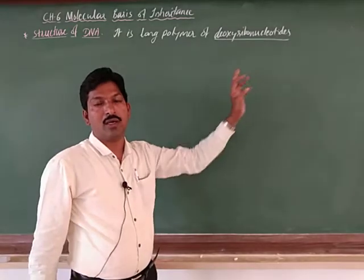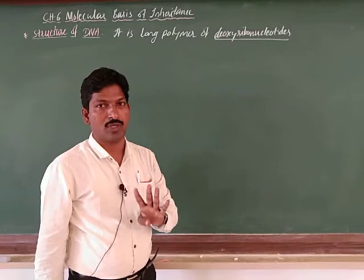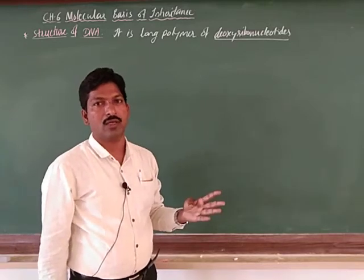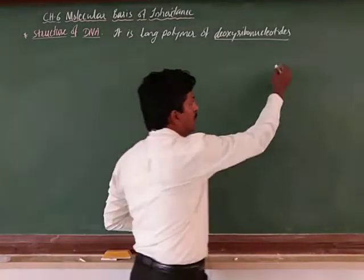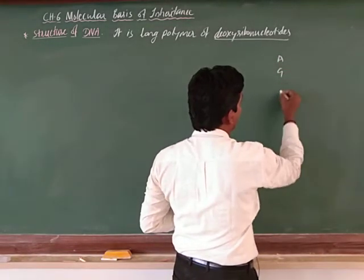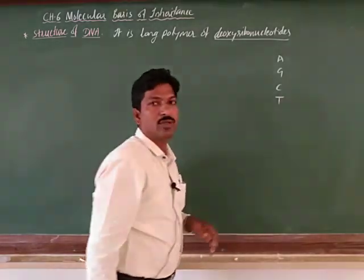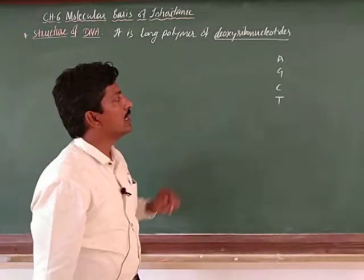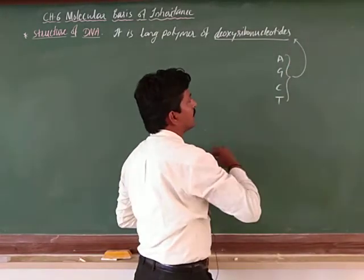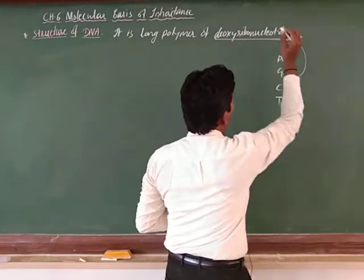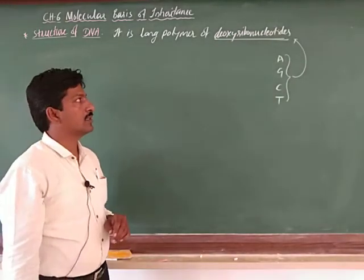Usually, how many types of nucleotides are present in DNA? There should be 4, and even in RNA also 4. Based on the nitrogen bases — there are 4 nitrogen bases: adenine, guanine, cytosine, and thymine. Based on these, there are 4 types of deoxyribonucleotides formed.